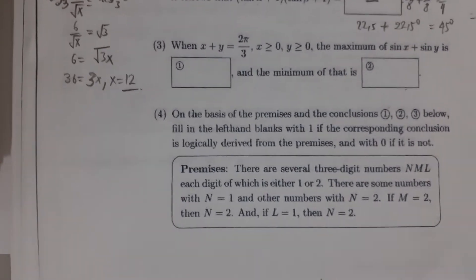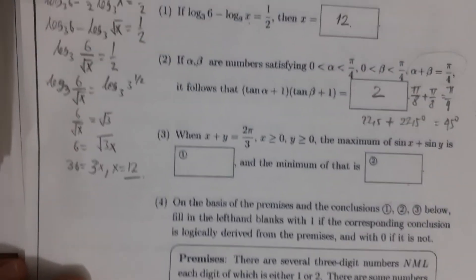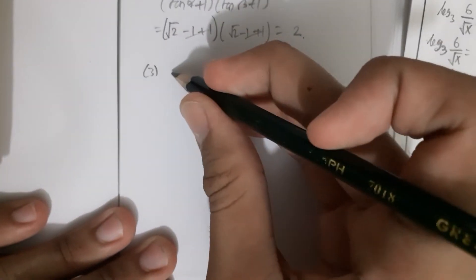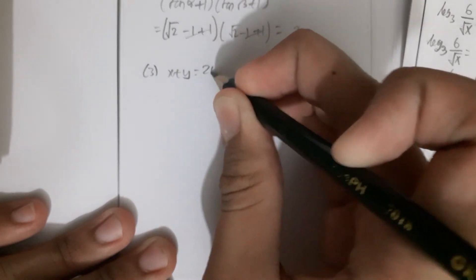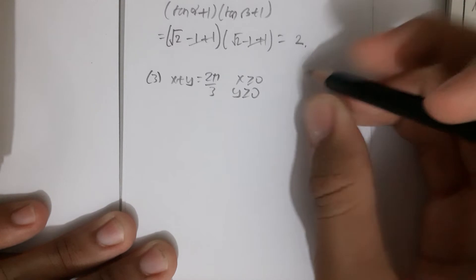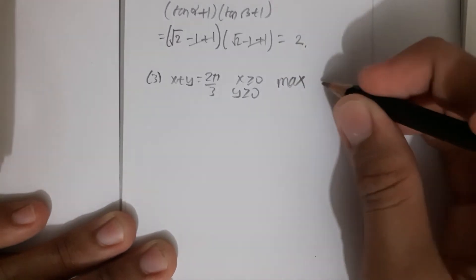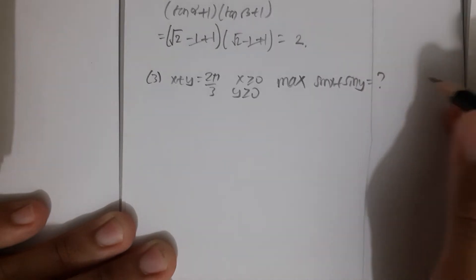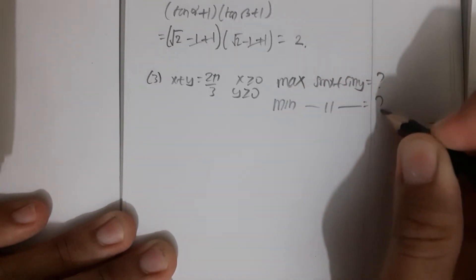Okay, so I want to write this on the next paper. It is number 3. When x + y = 2π/3 with the given requirements, they ask what is the maximum of sin x + sin y, and what is the minimum of sin x + sin y.